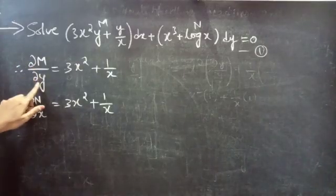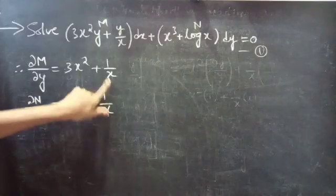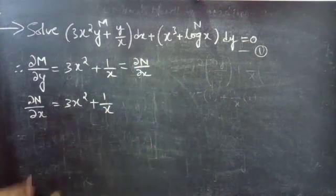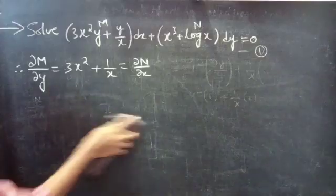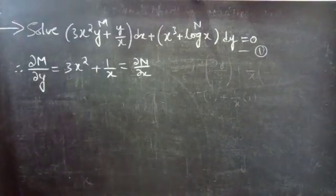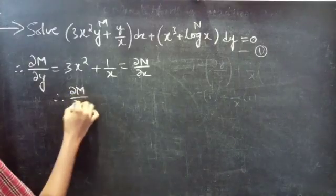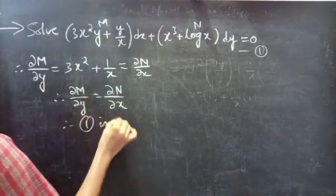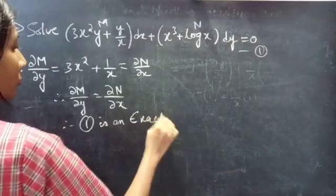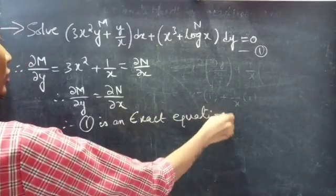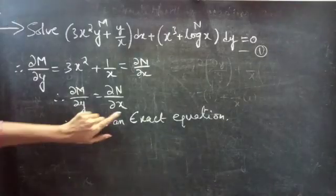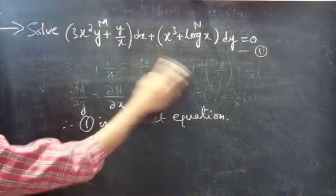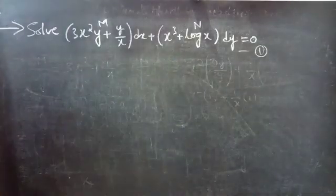Therefore, the partial derivative of M with respect to y equals 3x² + 1/x, which equals the partial derivative of N with respect to x. Since ∂M/∂y = ∂N/∂x, from this we can see that equation 1 is an exact equation. Since the given differential equation is an exact equation, we can find a general solution to it.